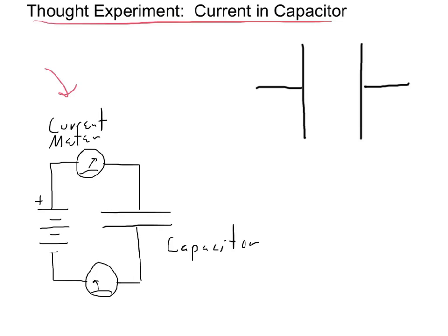When we hook up the battery, the current is going to flow and put positive charge on the plate of the capacitor. As time goes by, the battery is going to push more and more positive charge onto the plate. If the battery has some voltage V, we know that the amount of charge eventually going onto that capacitor is Q equal to the capacitance times the voltage — Q equals CV.